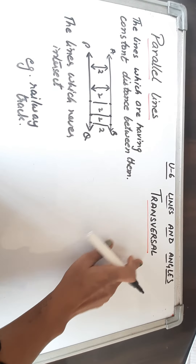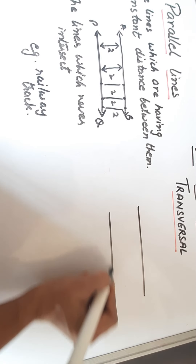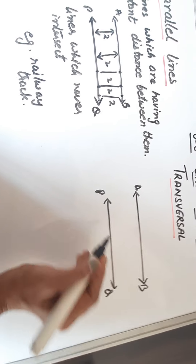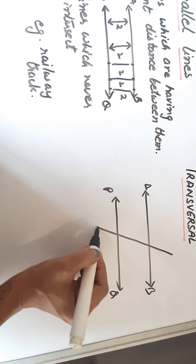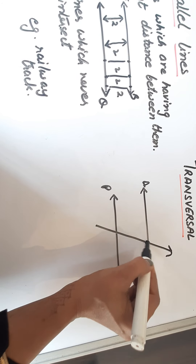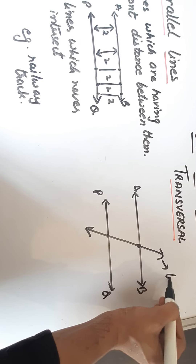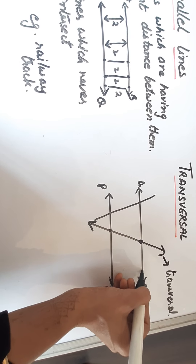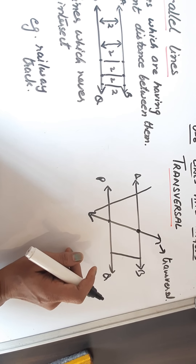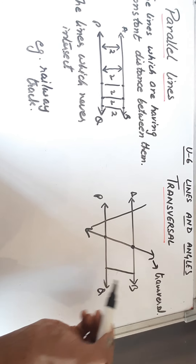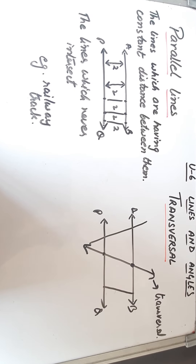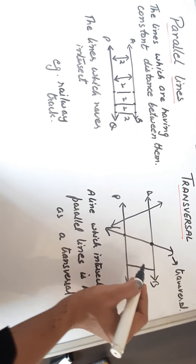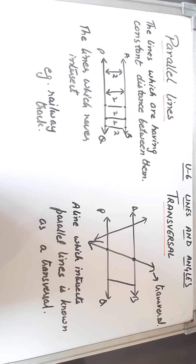Now another topic is transversal. What do we mean by transversal? If these two are the parallel lines — line AB and PQ — then any line which intersects these two lines, that line is known as a transversal. So any line which intersects the parallel lines is known as a transversal, regardless of its direction or angle.